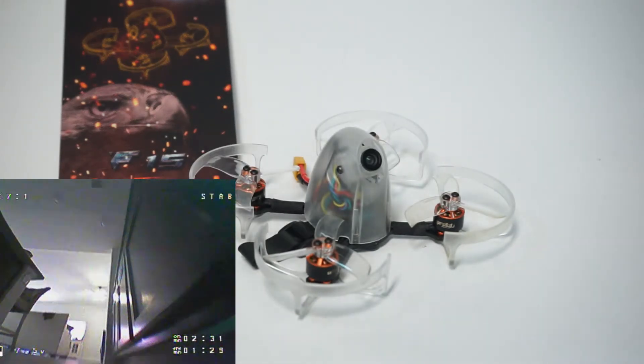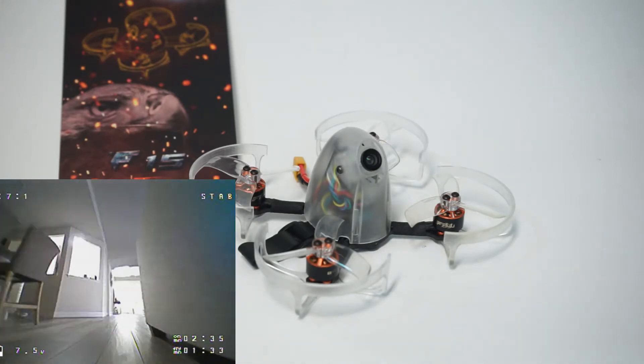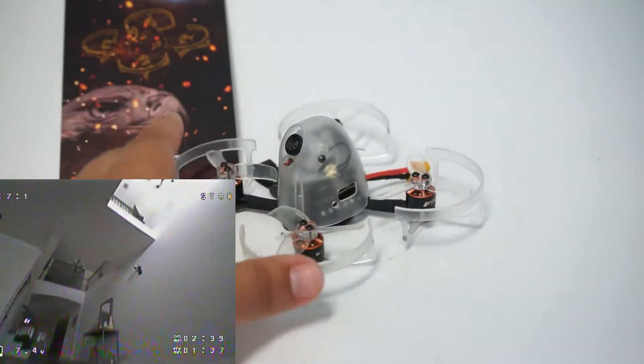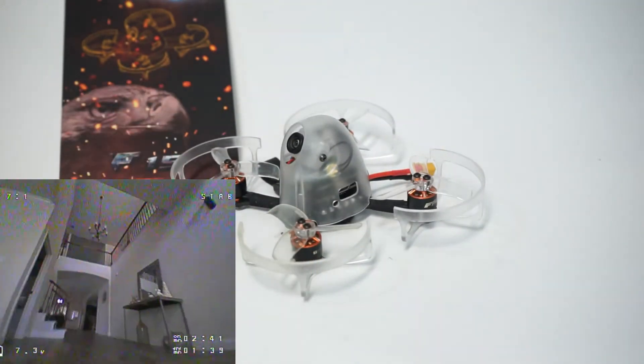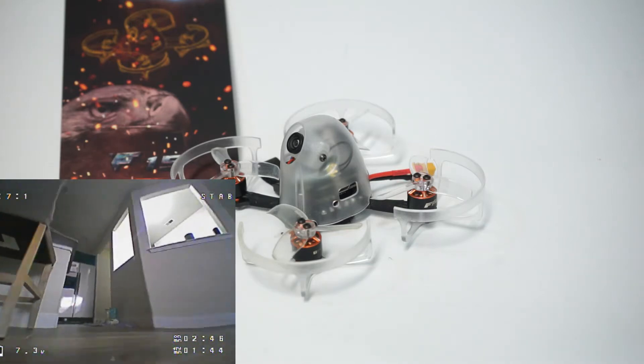It already has an XT30 so you don't have to switch that over like you do for some of these other micro quads that have JSTs and it's a little heavy for indoors though. I'm not really sure what the goal is for this product.